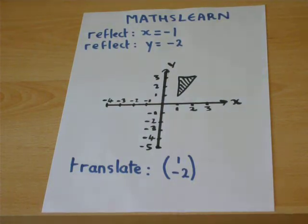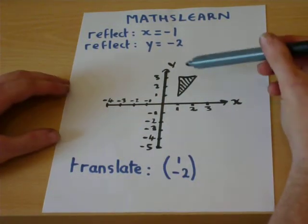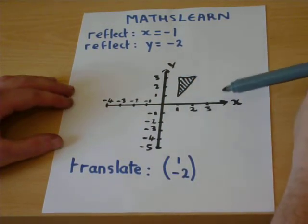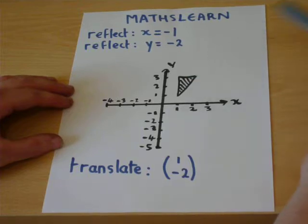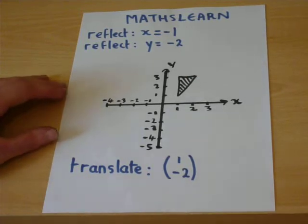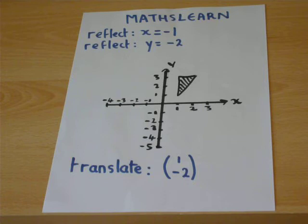Suppose you were given a shape, in this case a triangle, on a set of normal axes. There are a number of key transformations you must be able to do at GCSE.